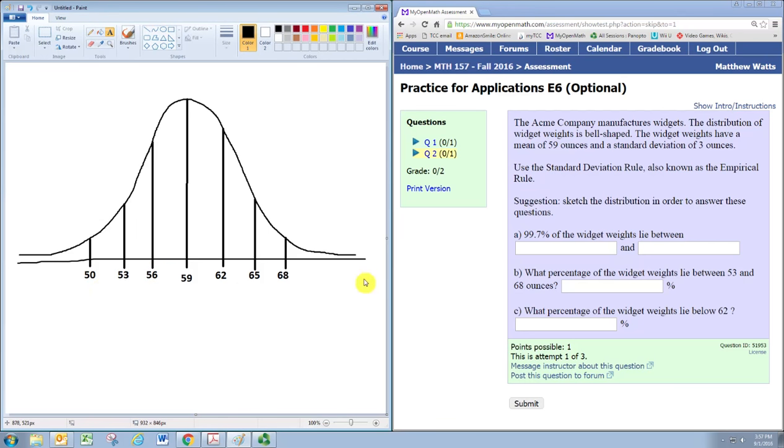So we now have all the values labeled out. And then it's just a matter of putting in the correct percentages. So we know that according to the empirical rule 68% is within one standard deviation. And so that's going to be 34% each.